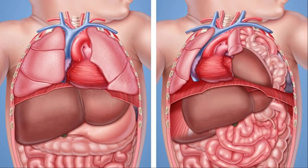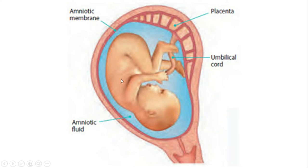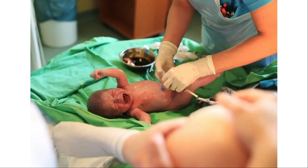Treatment usually starts after the baby is born. The main problem is hypoplasia of the lungs — they are undersized and underdeveloped. However, in the fetus, functioning lungs are not necessary because in the uterus the fetus does not breathe; it receives oxygen and nutrition through the placenta. The problem arises when the baby is born and starts breathing, experiencing difficulty due to the undersized and underdeveloped lungs.